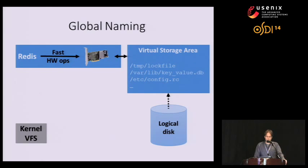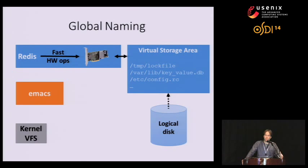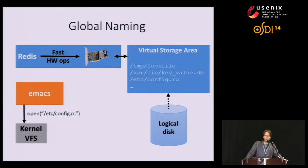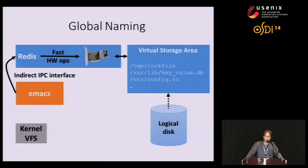If we fire up another application — say Emacs — to edit the configuration file, Emacs has no idea in what format that config file is stored. So Emacs issues a regular open system call to the kernel for that configuration file. The kernel virtual file system knows that Redis is responsible for implementing storage of that configuration file, so it redirects Emacs to the Redis application via an indirect IPC interface that is POSIX-compliant. Emacs can then access the config file using Redis's I/O library.